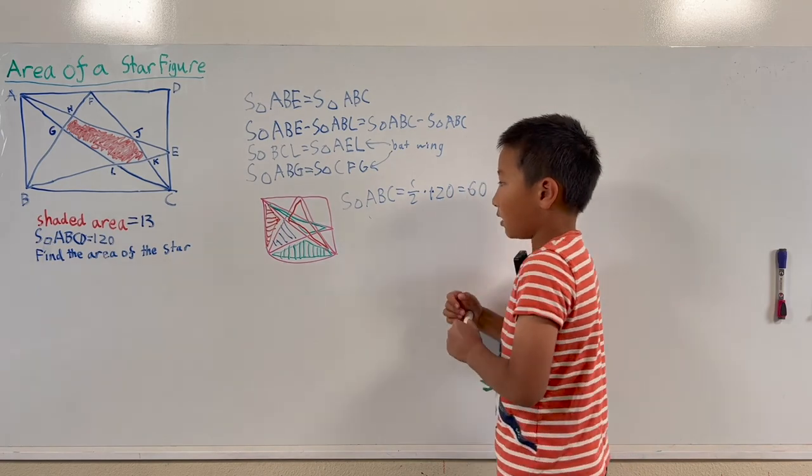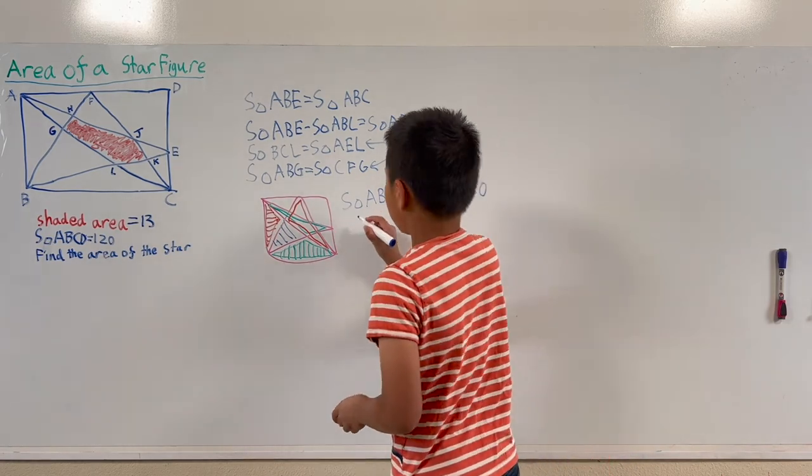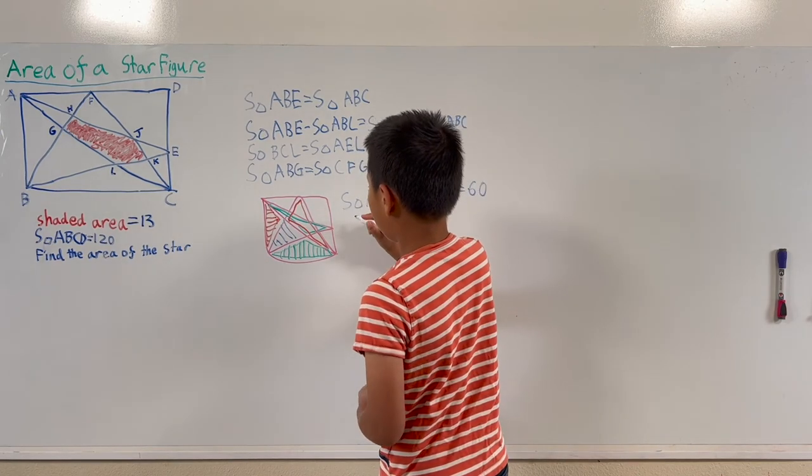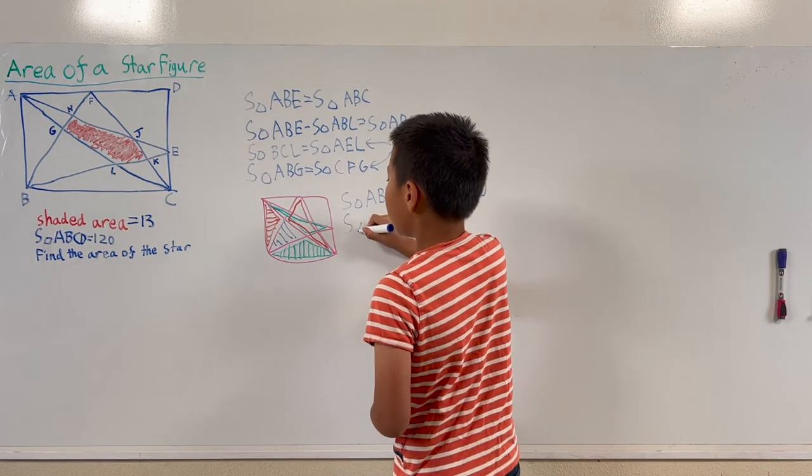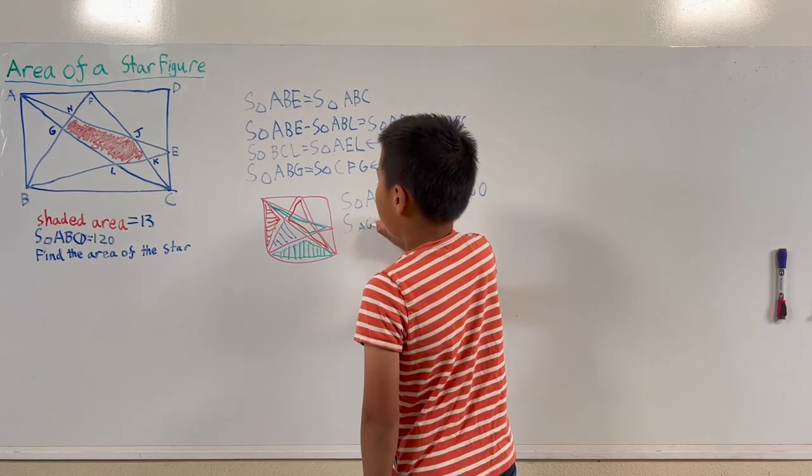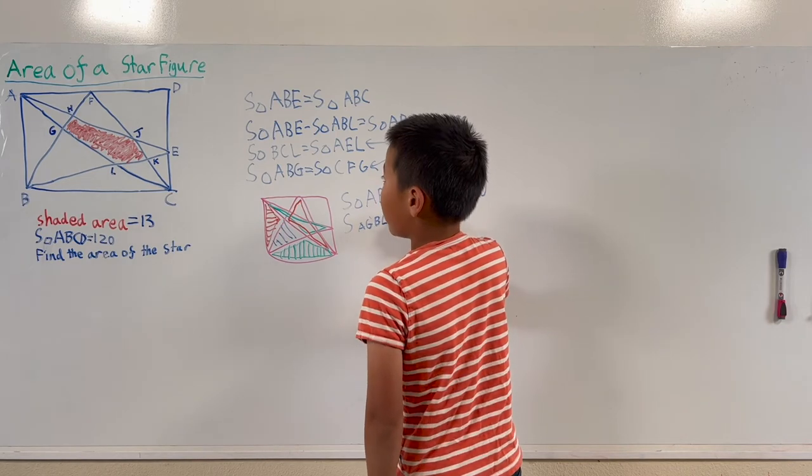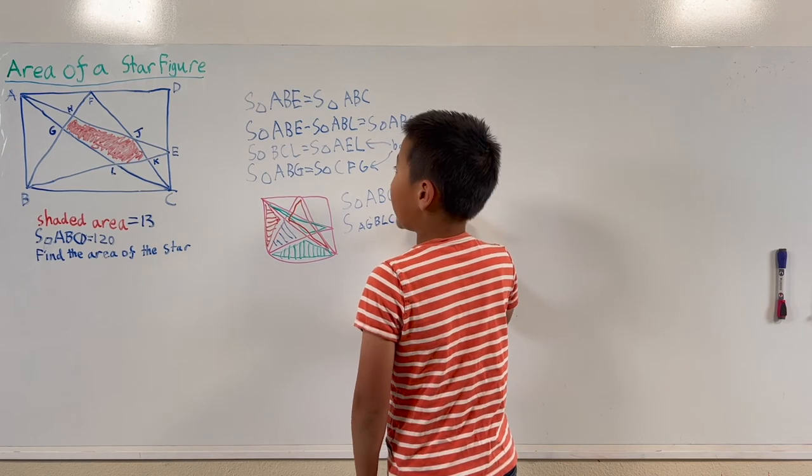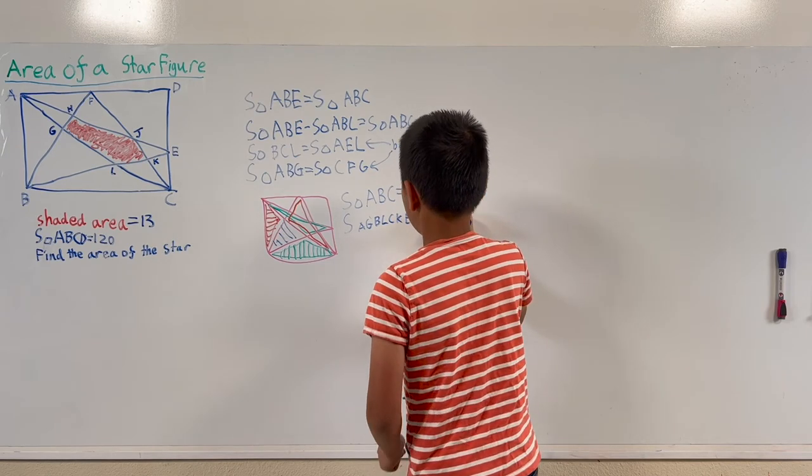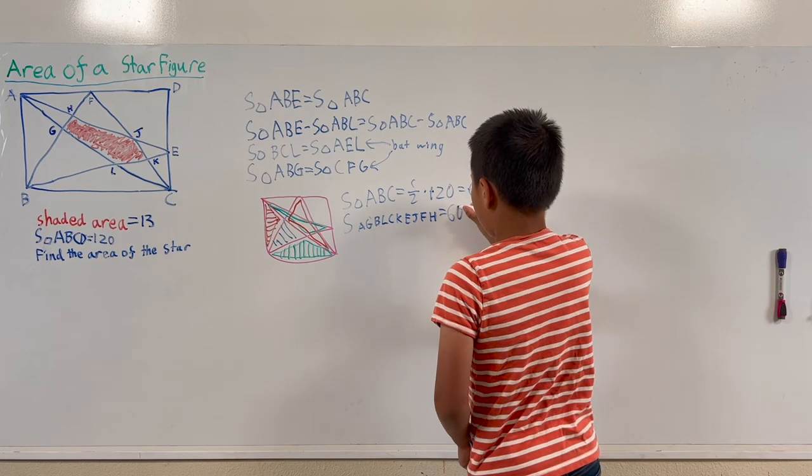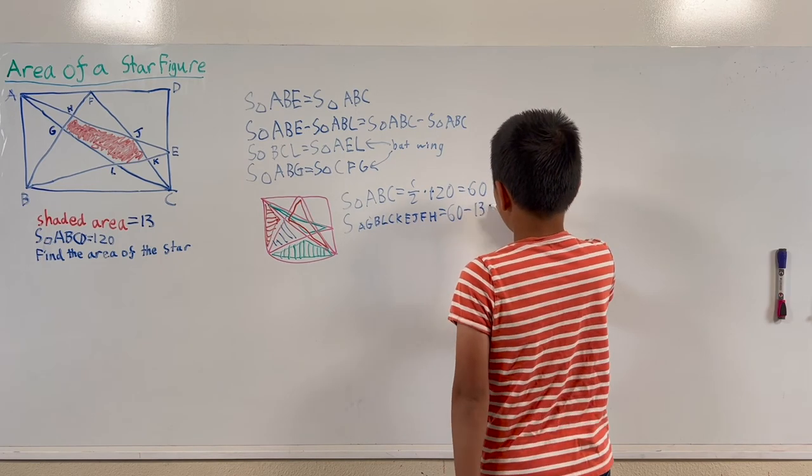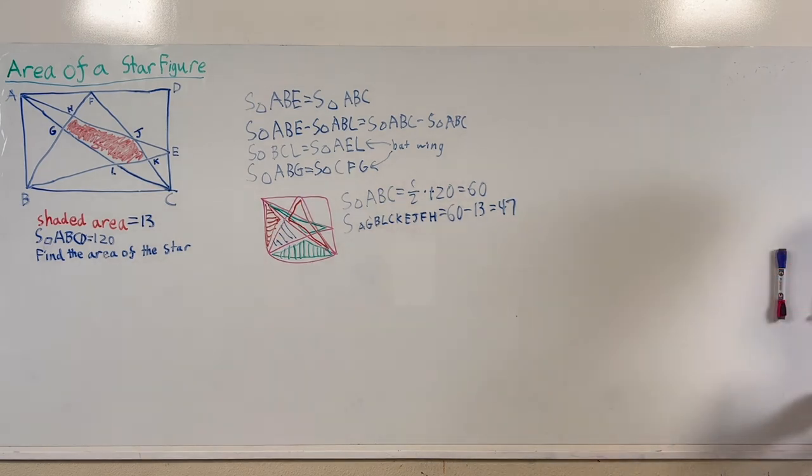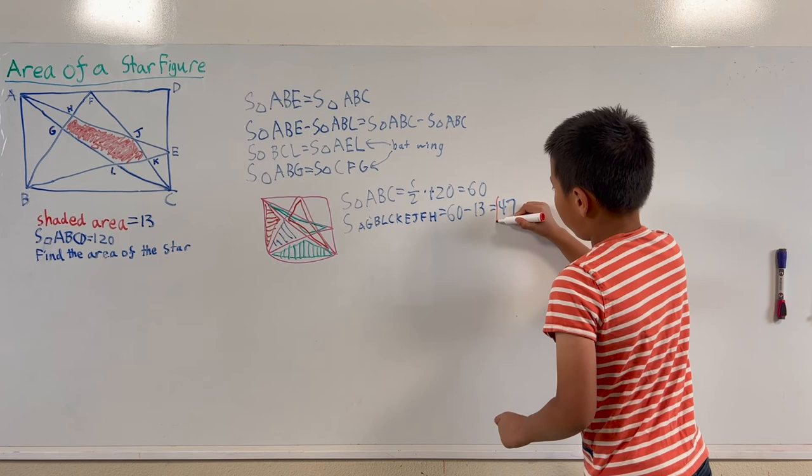And then we have to do 60 minus 13 because the red pentagon is repeated twice. AGBLCKEJFH is 60 minus 13 equals 47. So our answer is 47.